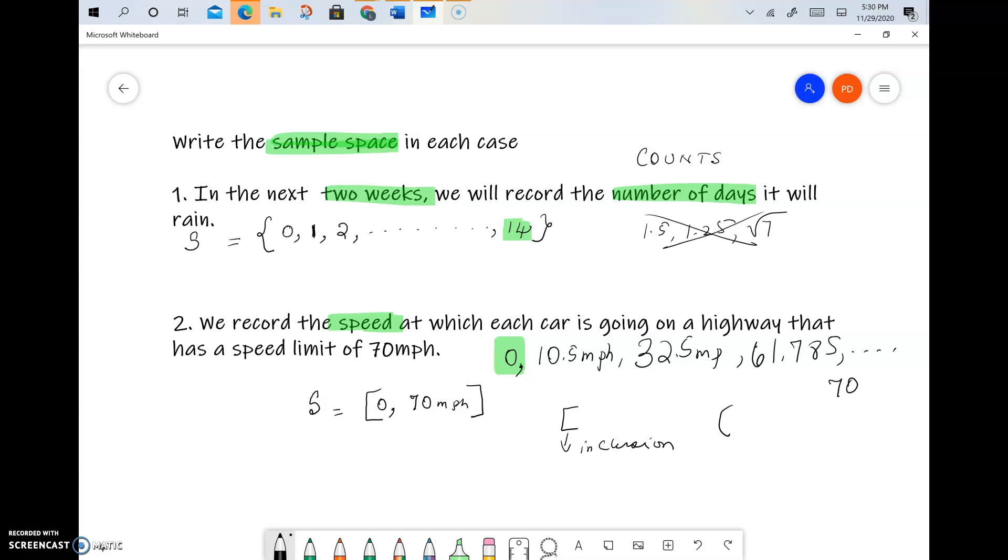And this would mean not including. If there is reason to believe that none of the cars have stopped, then it would be zero comma 70, which means that zero is not included, everything above zero is included.